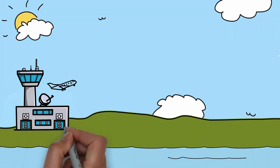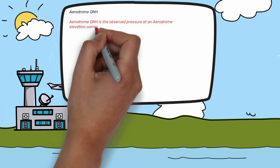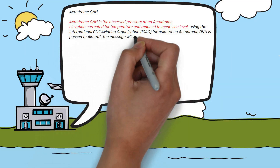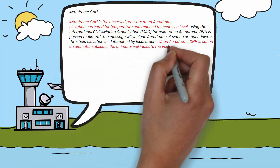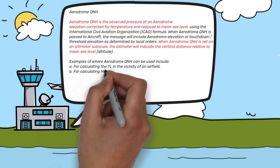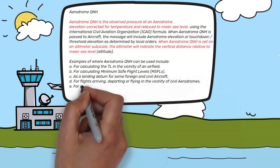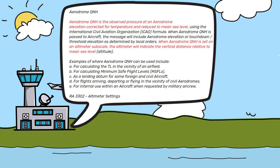The textbook definition of QNH is the observed pressure at an aerodrome elevation, corrected for temperature and reduced to mean sea level. When QNH is set on an altimeter subscale, the altimeter will indicate the vertical distance relative to mean sea level.